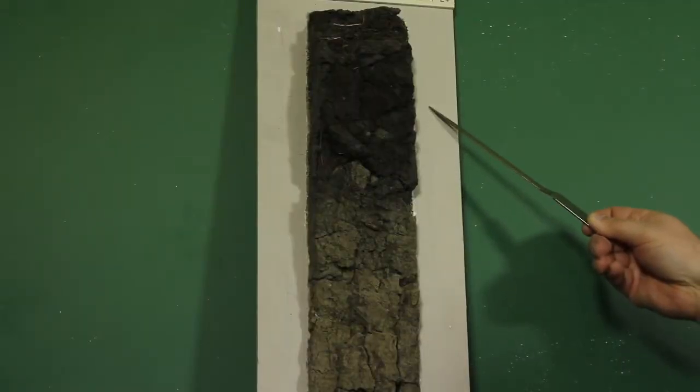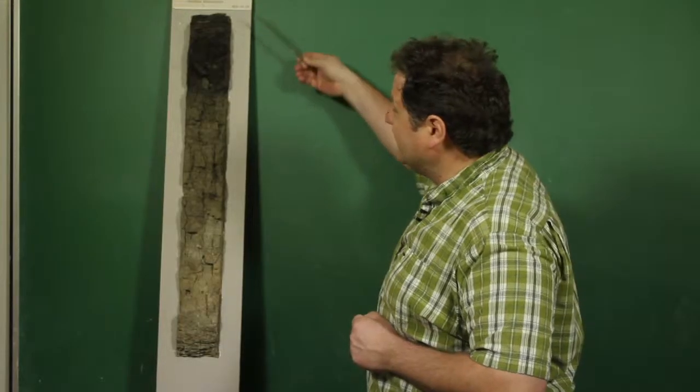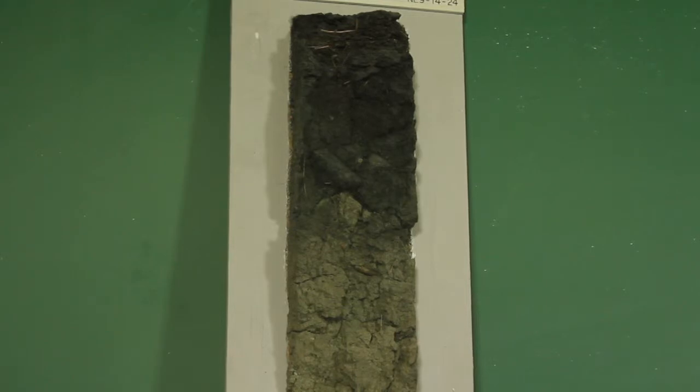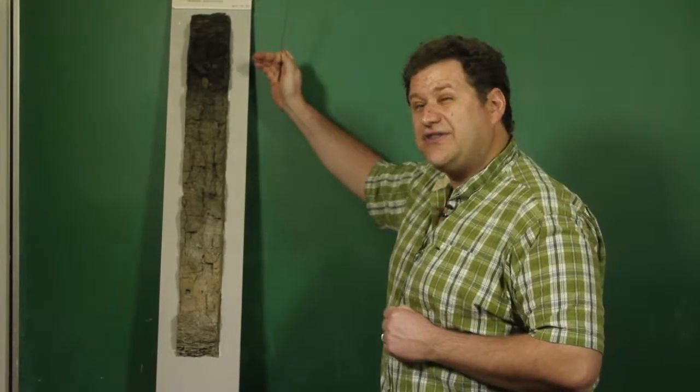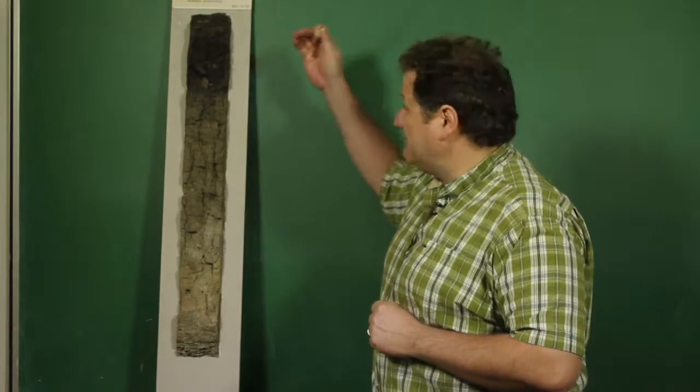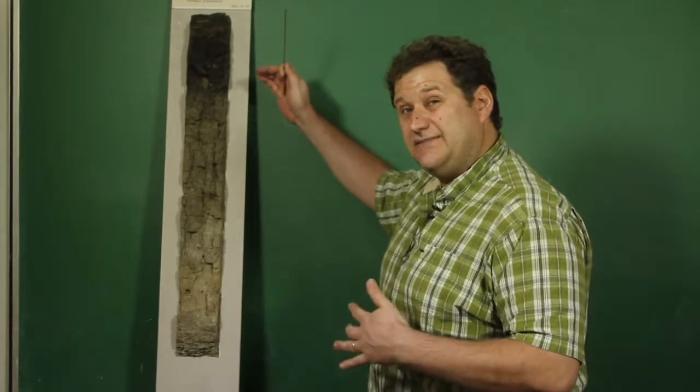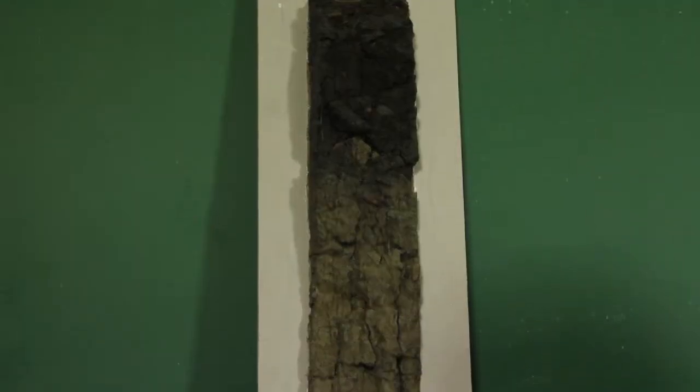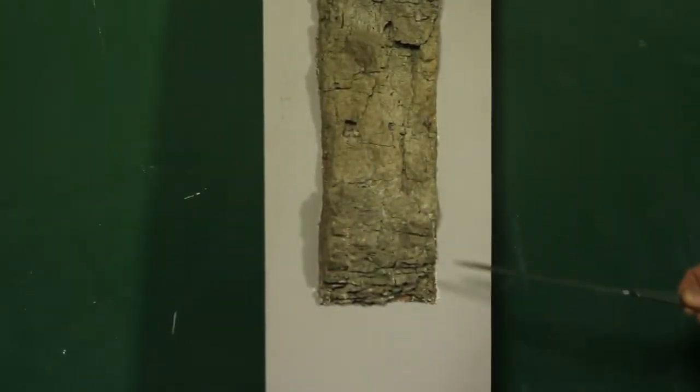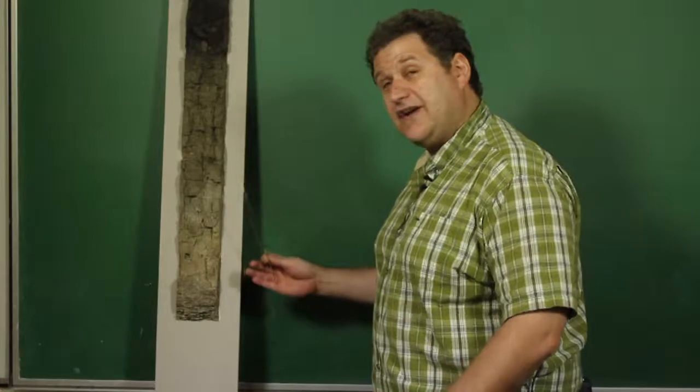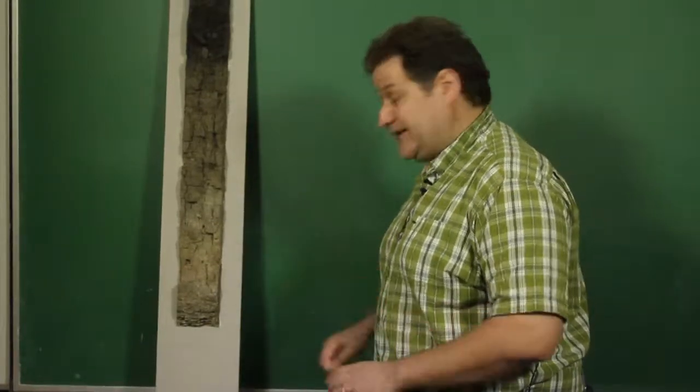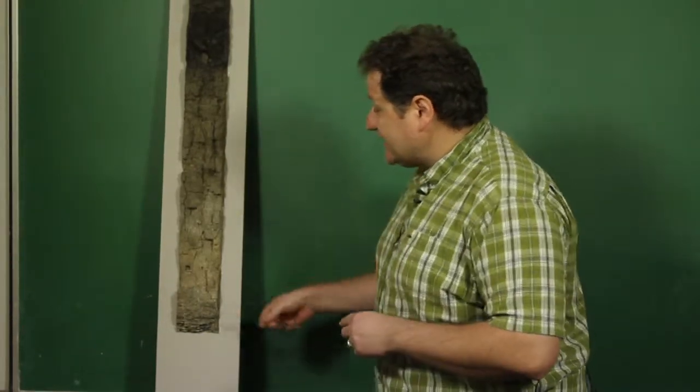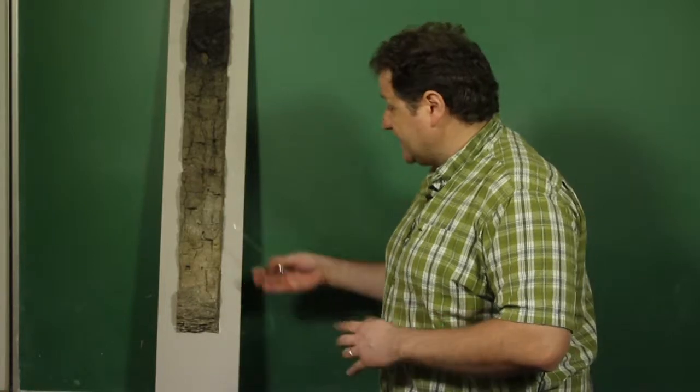The first thing you notice when you look at a soil profile like this is near the surface of the soil is this dark black color. This was not here originally when the soil material was first deposited. It would have looked more like this down at the bottom, which we call the C horizon. You can see it's pale in color. This is just the particles as they were deposited perhaps thousands of years ago. It's just sand, silt, and clay particles together.